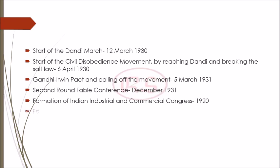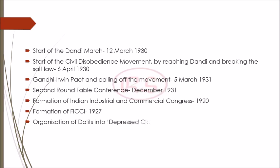Then came the organization of backward communities — the Depressed Class Association. This was an association by B.R. Ambedkar for the betterment of the backward class, formed in 1930. When Gandhi ji saw that Bhimrao Ambedkar was asking for reserved seats for backward communities, he started a fast unto death because he felt national unity was at risk. The result was the Poona Pact of September 1932.